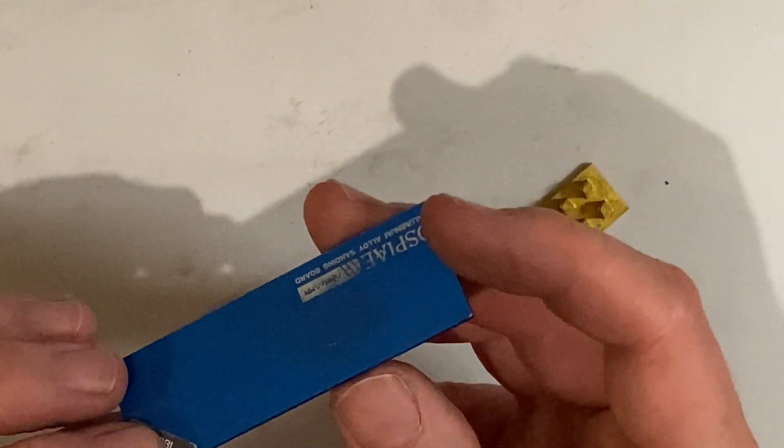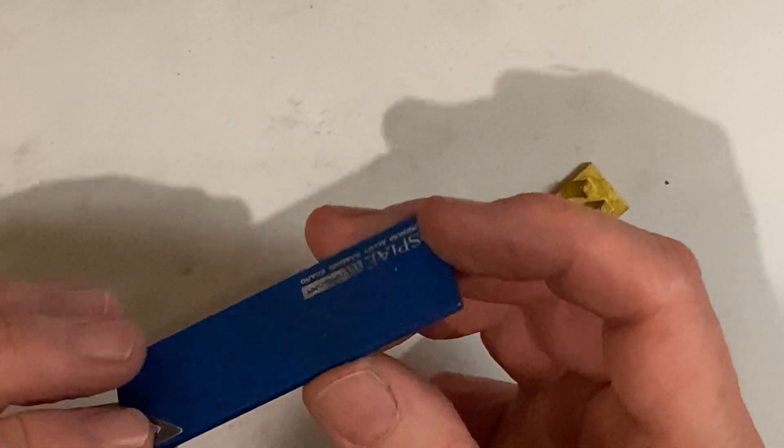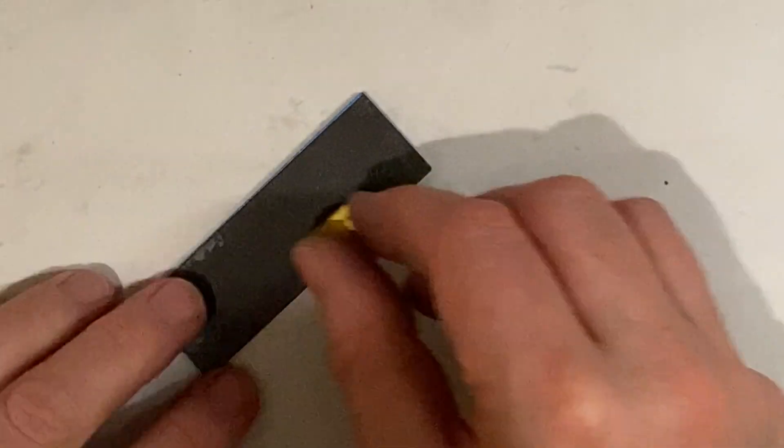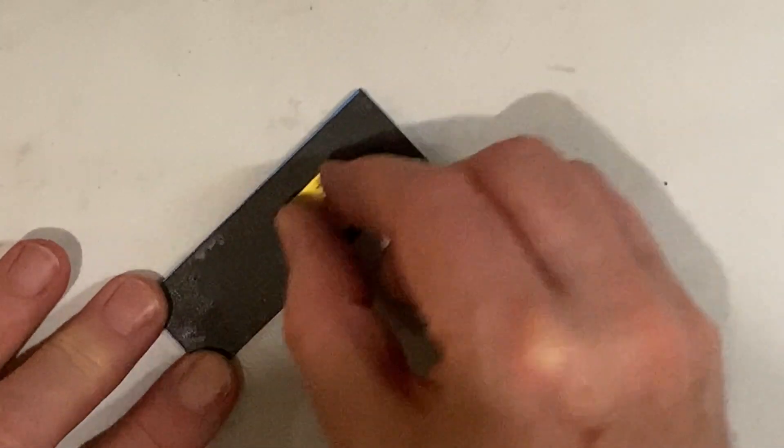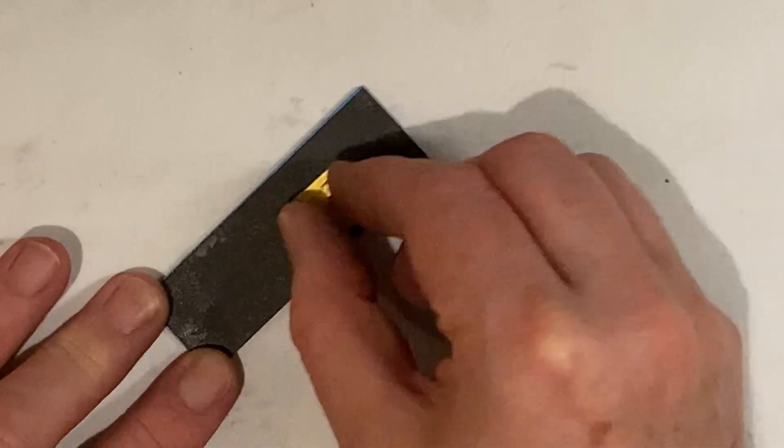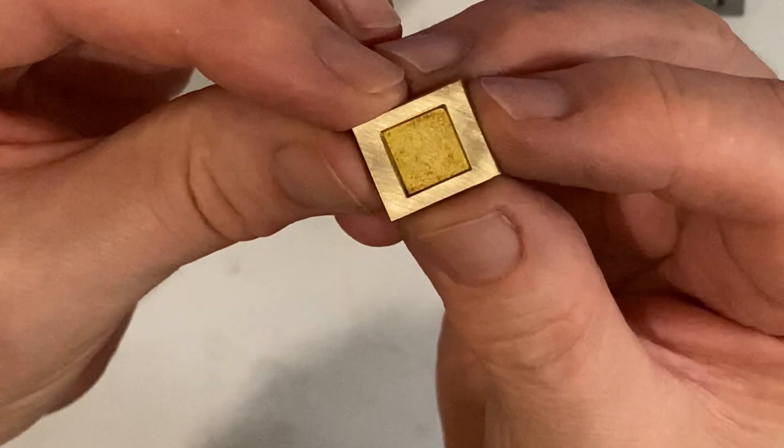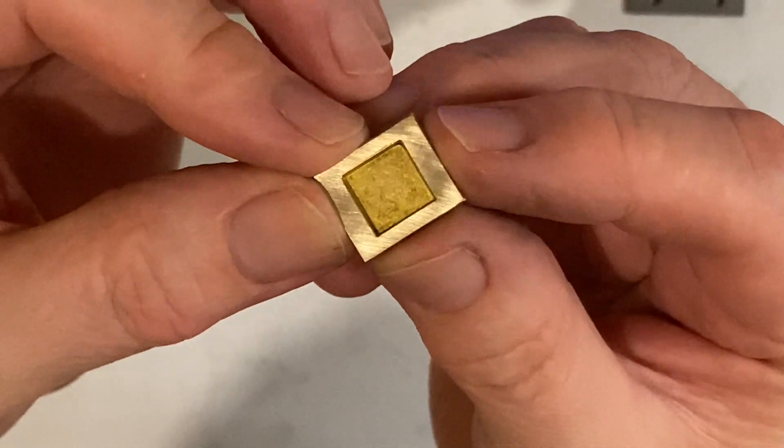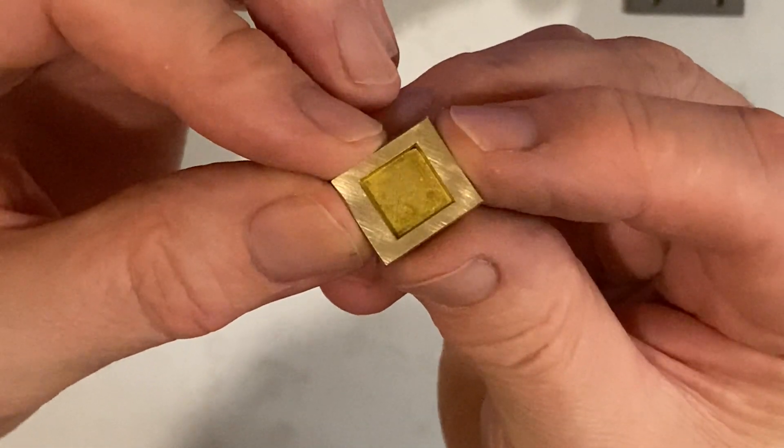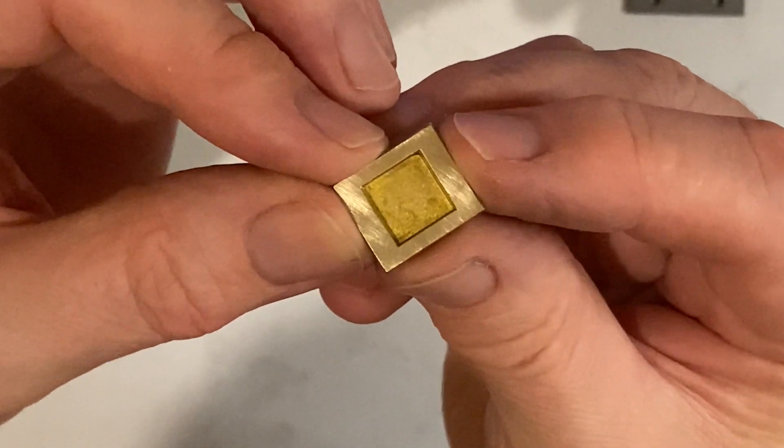Here I'm using some 180 grit sandpaper which is stuck to a flat aluminium sheet. I finished this off with 280 then 400 grit sandpaper and now we've got a nice smooth surface that will give a good steam tight seal.